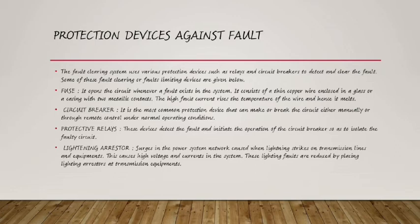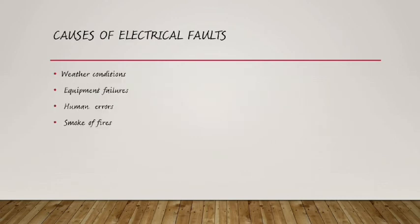Another protection device is the protective relay — this device detects a fault and initiates the operation of the circuit breaker to isolate the faulty circuit. We also have the lightning arrester — used to arrest lightning, which is a discharge of electrons from clouds during a thunderstorm. To prevent this from affecting our electrical materials, we use a lightning arrester in the power system network. When lightning strikes transmission lines and equipment, it causes high voltage and current in the system, so lightning arresters are placed at transmission equipment to arrest the excess electron discharge.